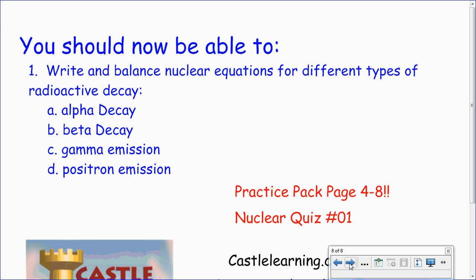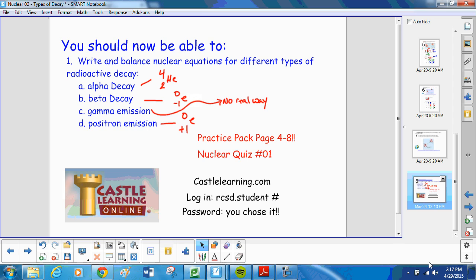Write and balance nuclear equations for different types of radioactive decay. So, alpha decay, we've got our 4He2 as a product. Beta decay, we've got our 0e-1 as a product. Positron, we've got 0e+1 as a product. And gamma emission, well, there's no real way to do those. Gamma emission usually accompanies one of the other types of radioactive decay. On our practice pack, we've got a lot of balancing these equations to do. Page 4 through 8. And you've got a quiz on CASEL. So, thanks for watching. You're halfway through the unit's lectures. There's only four this time around.